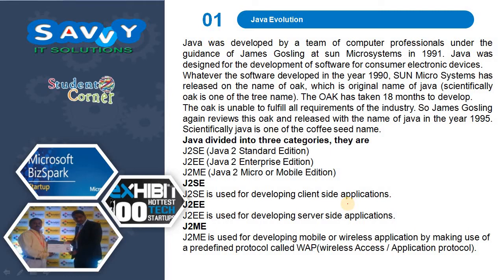Java was developed by a team of computer professionals under the guidance of James Gosling at Sun Microsystems in 1991. Java was designed for the development of software for consumer electronics devices. The software developed in 1990 was released by Sun Microsystems under the name Oak, which is the original name of Java. The Oak took 18 months to develop, but was unable to fulfill all requirements of the industry. So James Gosling reviewed Oak and released it with the name Java in 1995. Scientifically, Java is one of the coffee seed names.